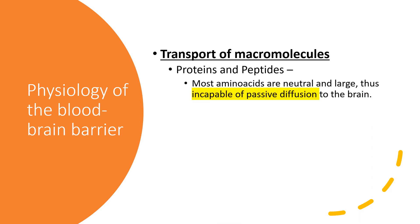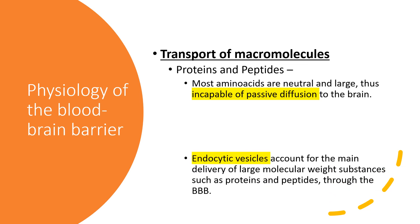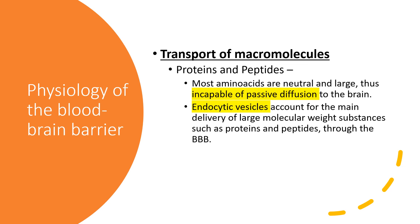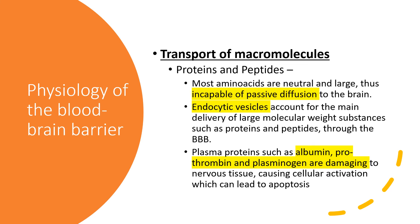Most amino acids are neutral and large, so they are incapable of passive diffusion into the brain. Endocytic vesicles account for the main delivery of large-molecular-weight substances such as proteins and peptides. Plasma proteins such as albumin, prothrombin, and plasminogen are damaging to nervous tissue and can cause cellular activation leading to apoptosis; they normally remain in plasma. In disease states, rising protein levels in CSF indicate a pathological process.